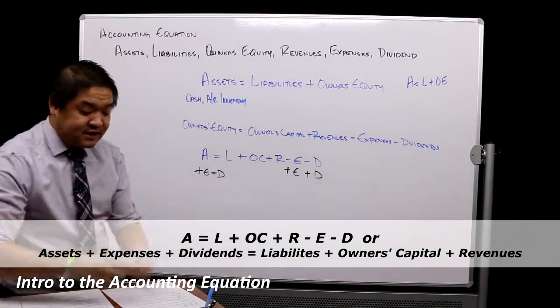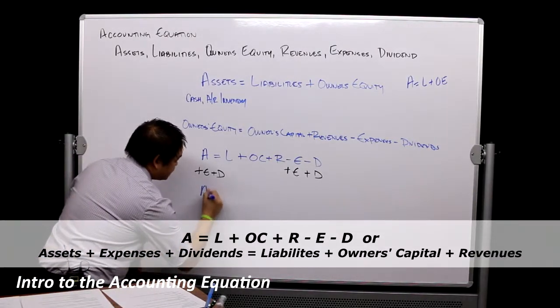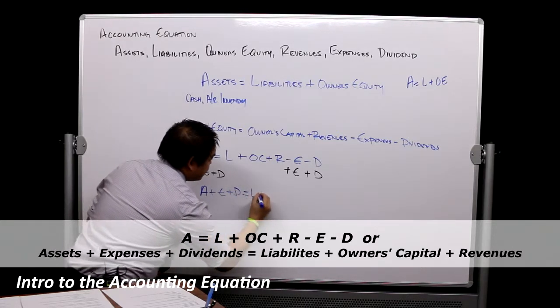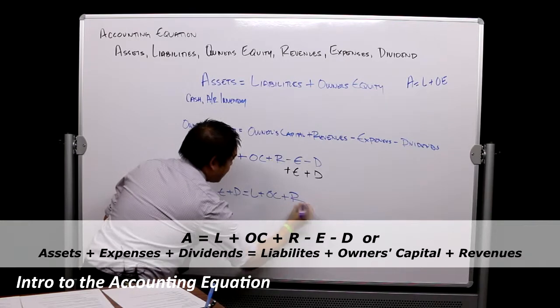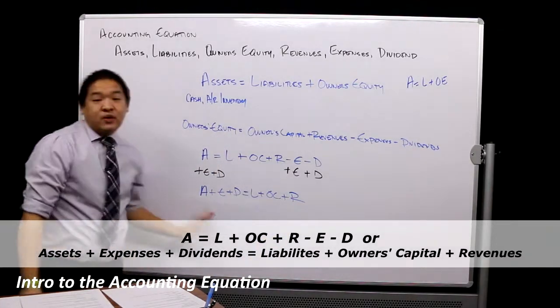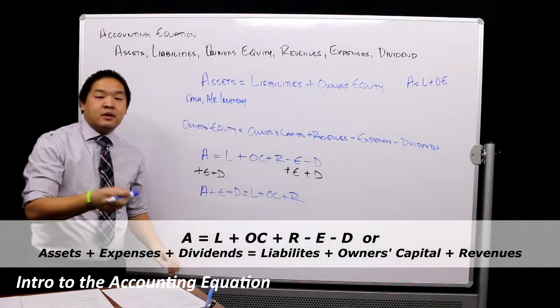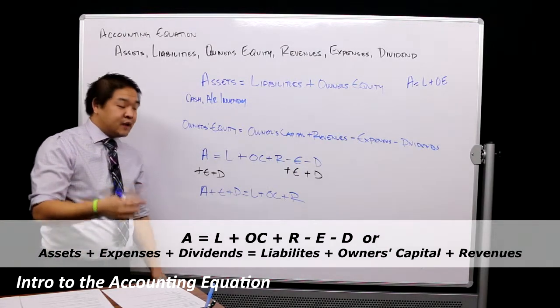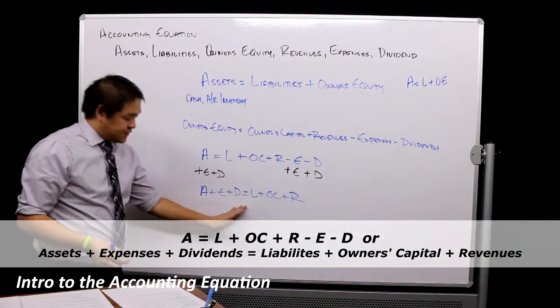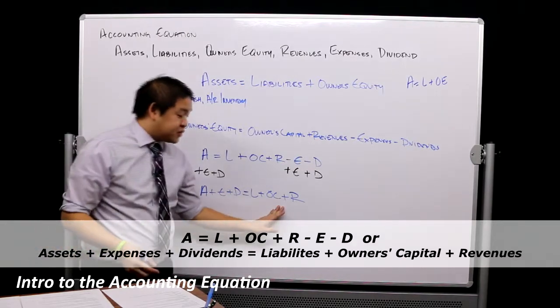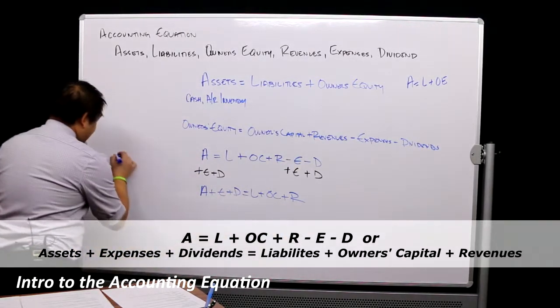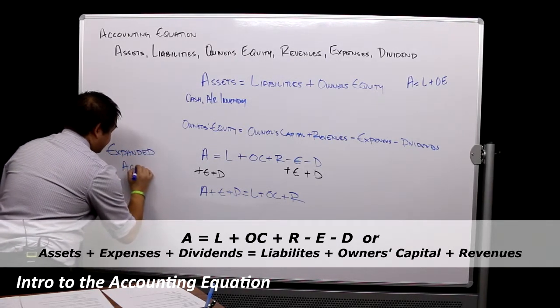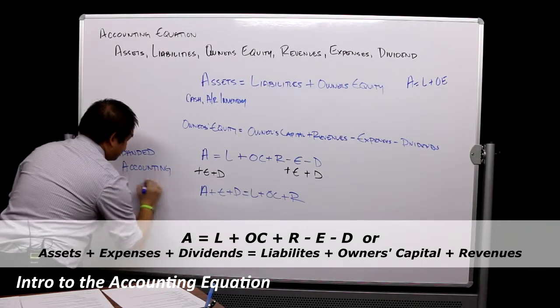At the end of the day, we're left with Assets plus Expenses plus Dividends equals Liabilities plus Owner's Capital plus Revenue. The reason I'm teaching you this is because later on we're going to use debits and credits, which we'll talk about in our next lesson. That's what I like to call our expanded accounting equation.